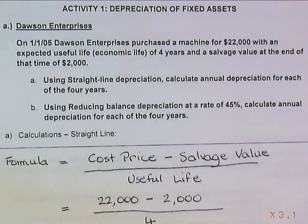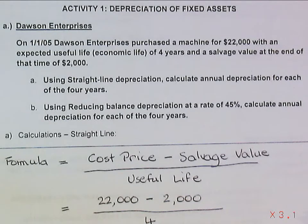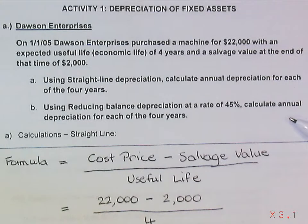Hi everyone. This morning I'm going to show you how to calculate the depreciation of fixed assets. To do that I'm using activities 1A and 1B which you find at the end of your PowerPoint notes. Activity 1A involves Dawson Enterprises, and we see by looking at the information provided that Dawson Enterprises purchased a machine for $22,000 on 1 January 2005.